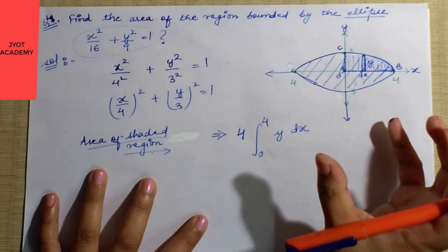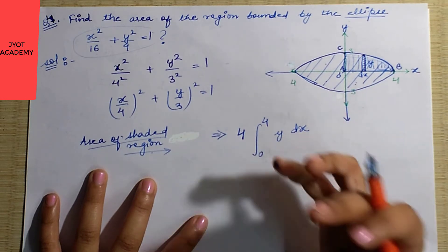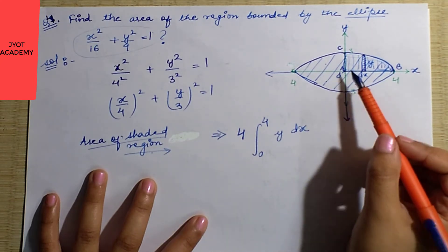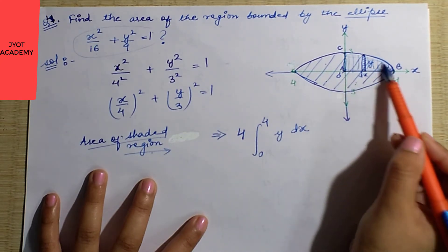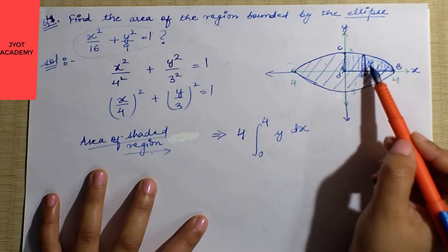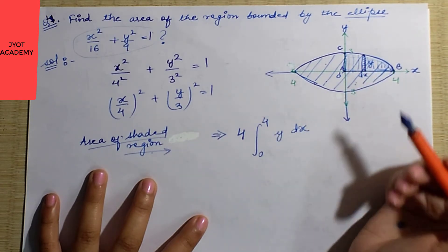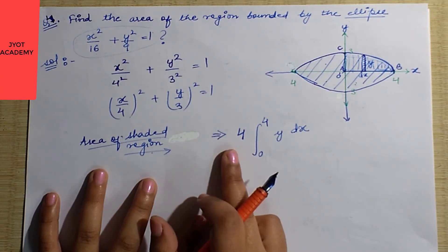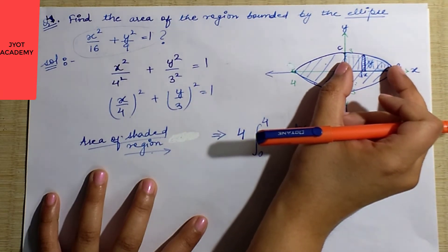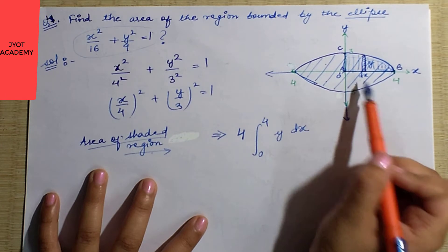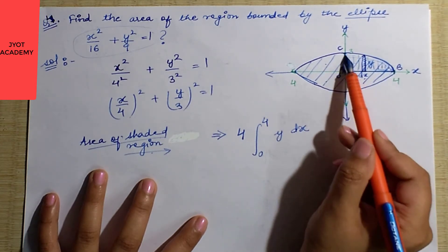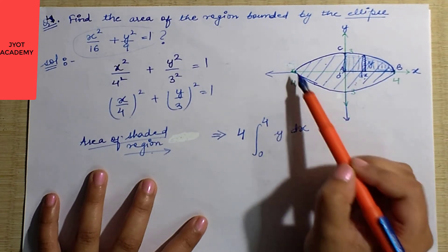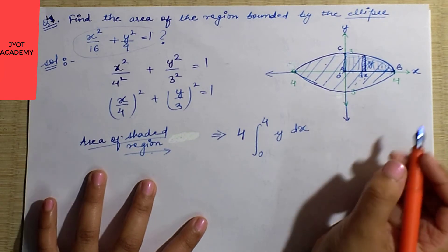We focus on the first quadrant because all values there are positive, making calculations very easy. With limits from 0 to 4, this covers the entire first quadrant region. Without multiplying by 4, your answer will be wrong — you'd only be showing the first quadrant area, but we need all four pieces to get the complete ellipse area.